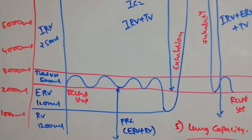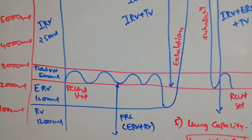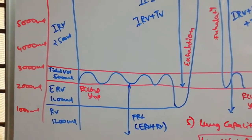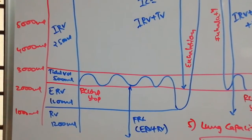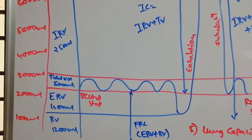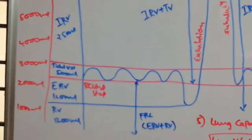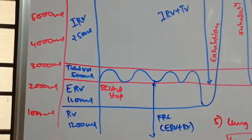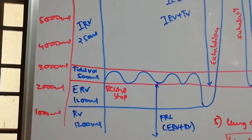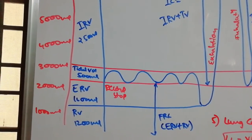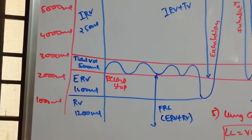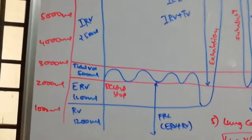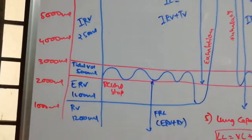The additional volume forcefully exhaled beyond normal exhalation — the Expiration Reserve Volume (ERV) — is 1,000 to 1,100 ml. Residual Volume (RV) is the volume remaining in the lungs after forceful exhalation. These are the four lung volumes: TV, IRV, ERV, and RV.